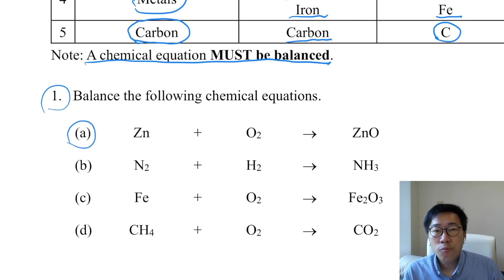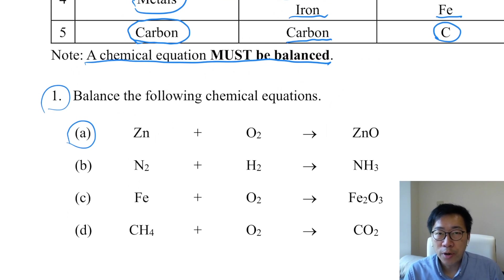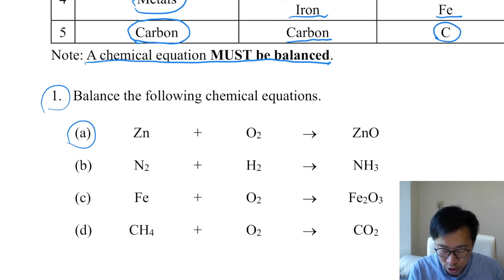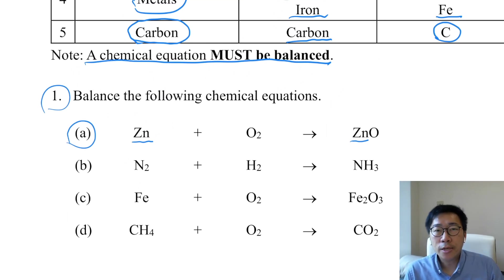Every time when you are to balance a chemical equation, you have to check on both sides the number of atoms for each element. For Sn on the left, we have one Sn atom. On the right, we also have one Sn atom. So the number of Sn atoms is balanced.